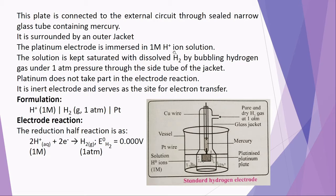The platinum electrode is immersed in a 1 mol H⁺ ion solution, such as HCl or HNO₃. The solution is kept saturated with dissolved hydrogen by bubbling pure and dry hydrogen gas at 1 atmosphere pressure through the side tube of the glass jacket. Platinum does not take part in the electrode reaction; therefore, it is an inert electrode and serves as the site for electron transfer.